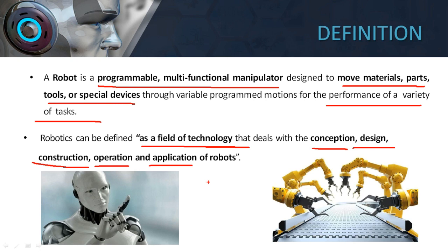Conception is imagining or visualizing what a robot needs to do. The robotic engineer conceptualizes the robot — visualizing what application the robot is required for. He designs the look of the robot, whether it should look like a human, an animal, or a machine. Then construction — how do you build the robot and what materials to use. Operation and application cover what kind of operation it should perform and what its applications are. That is how robotics emerges.